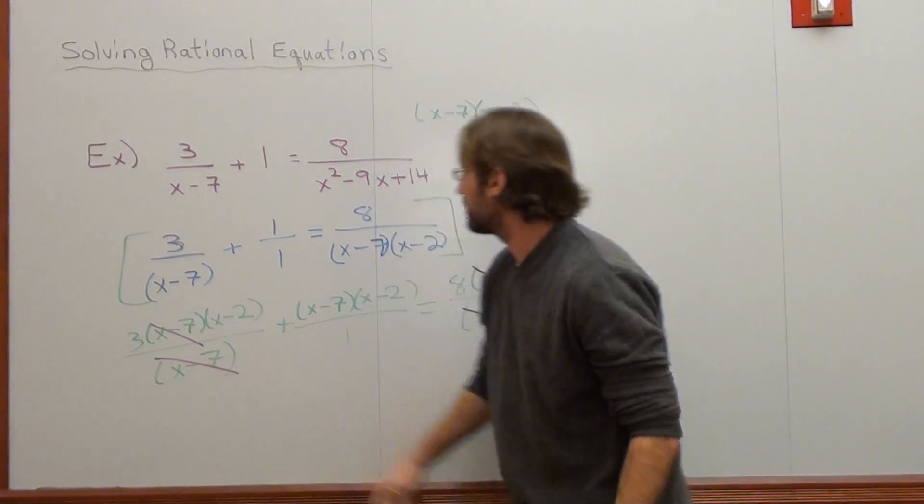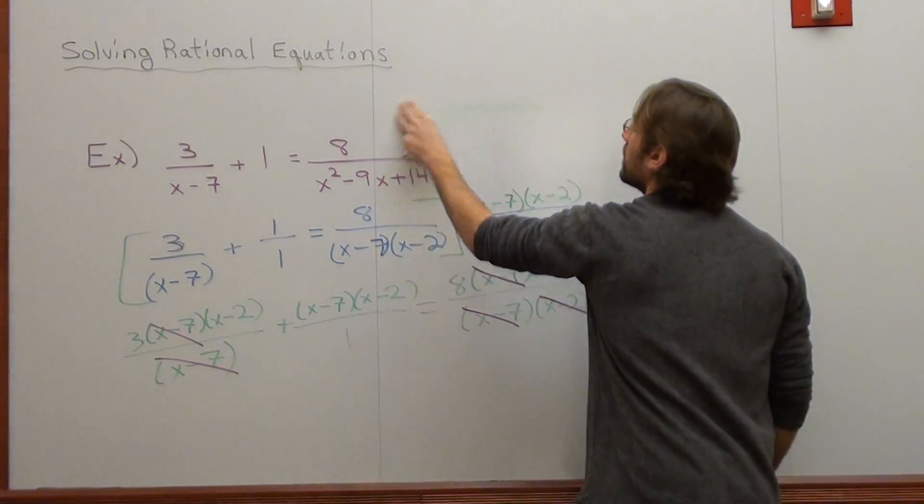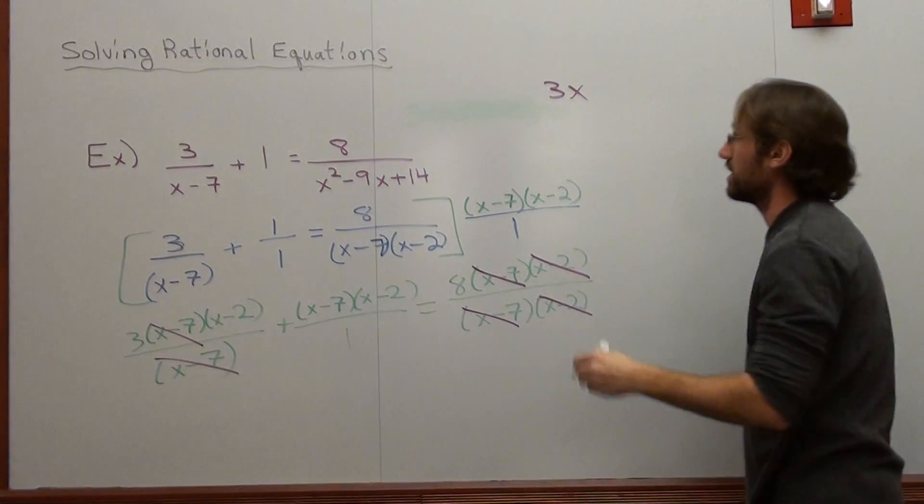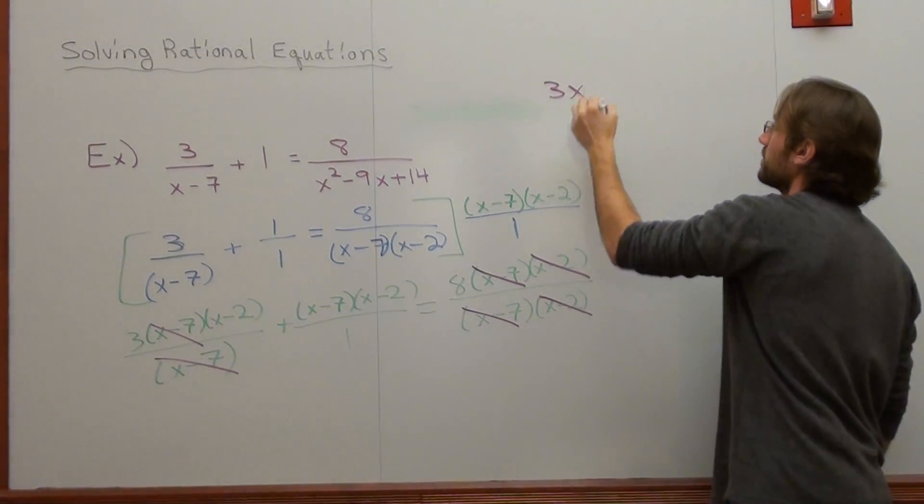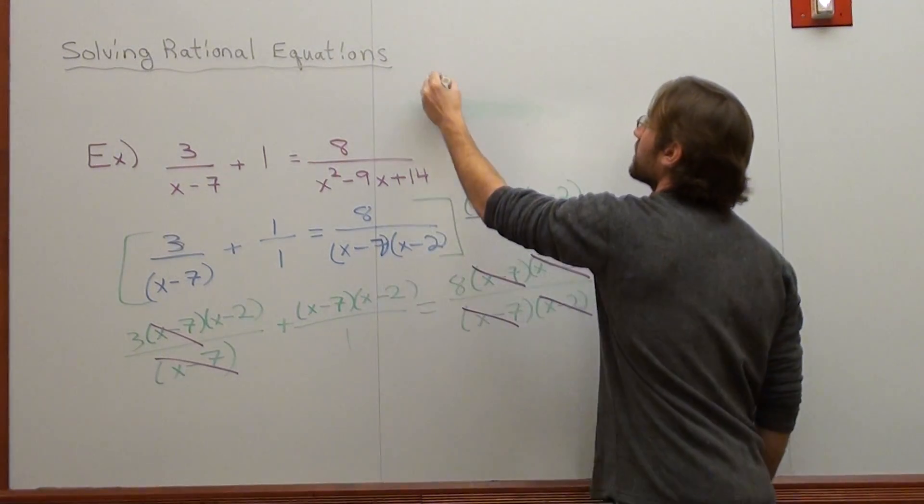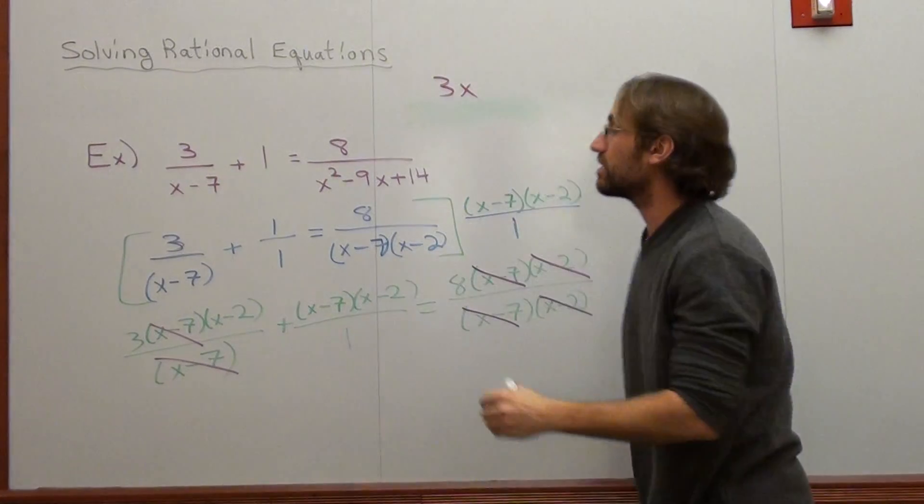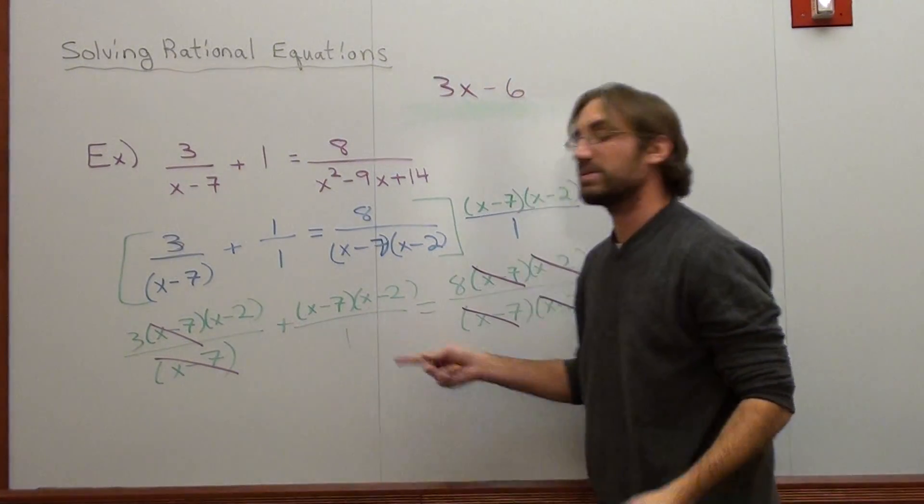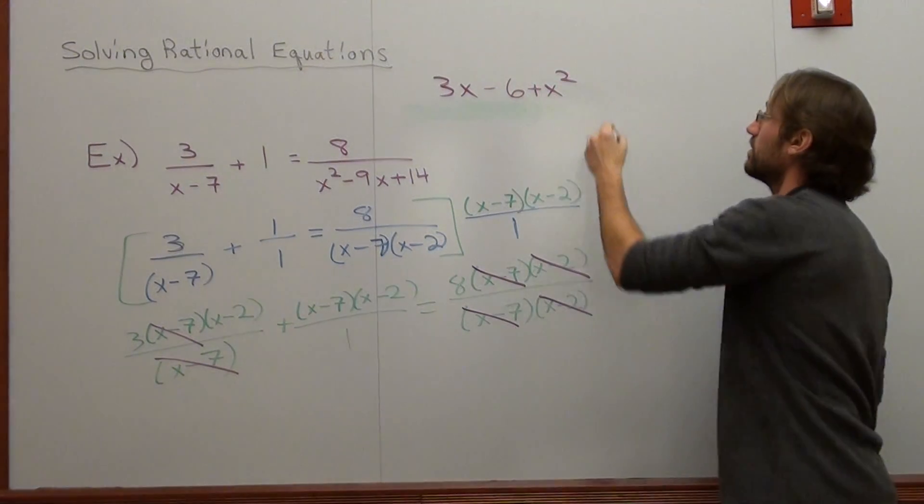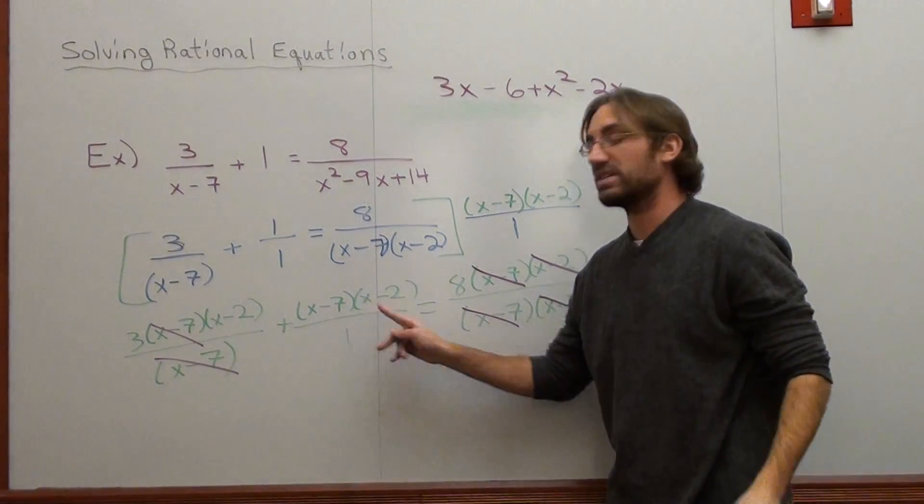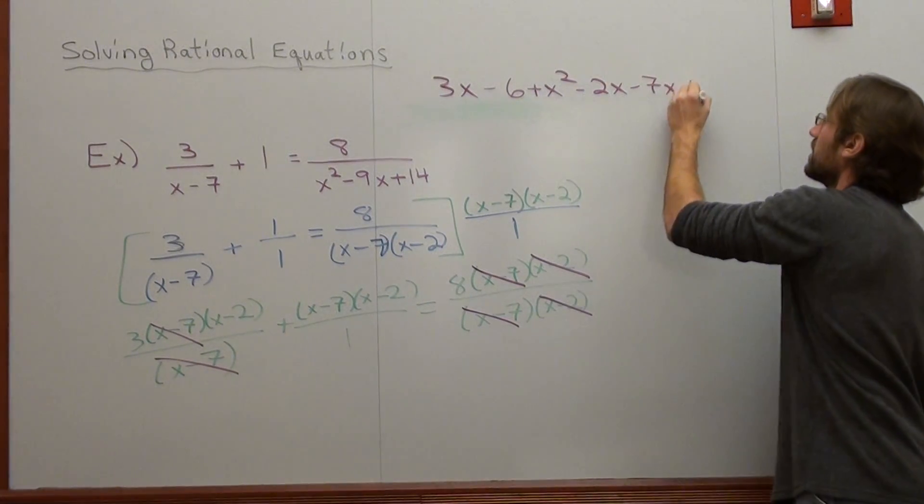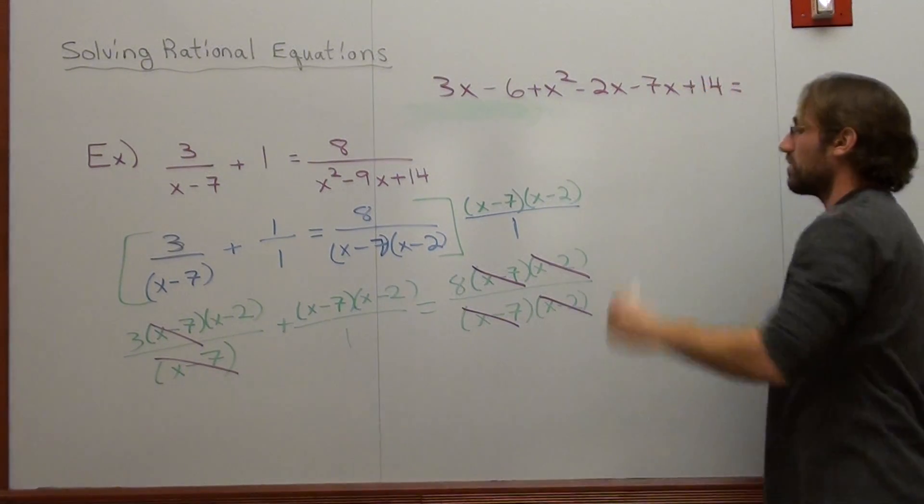Here we go. I got 3 times x, which is 3x. 3 times negative 2, which is negative 6. Probably not going to have enough room starting here. Let me show what you got. 3 times x is 3x. 3 times negative 2 is negative 6. Plus x times x is x squared. x times negative 2 is negative 2x. Negative 7 times x is negative 7x. Negative 7 times negative 2 is positive 14,